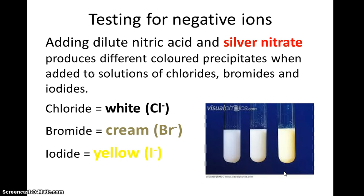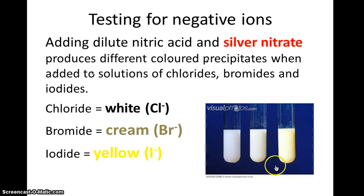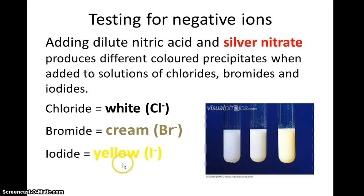Now on to testing for negative ions. For the halide ions — that's chloride, bromide, and iodide — we use silver nitrate. You need to add nitric acid first and then silver nitrate, and you get precipitates. The colours are quite subtle: chloride gives a white precipitate, bromide gives a cream precipitate, and iodide gives a yellow precipitate.